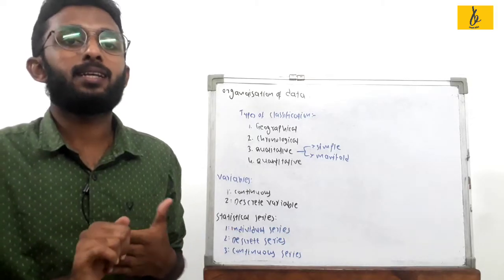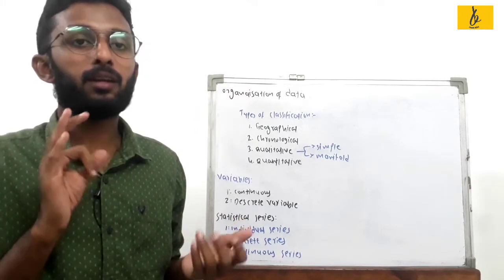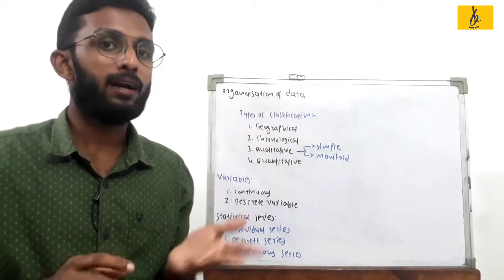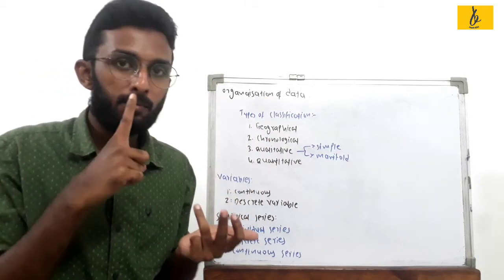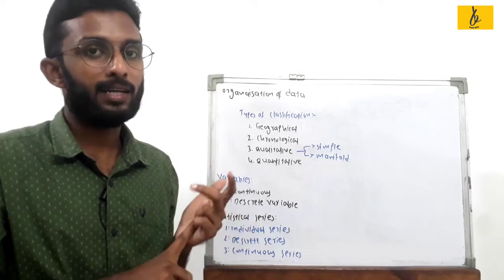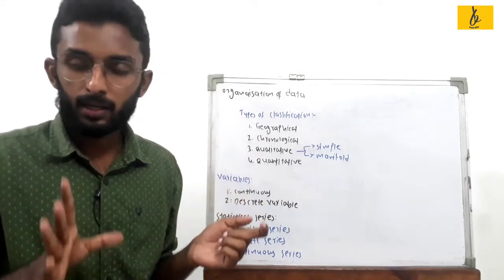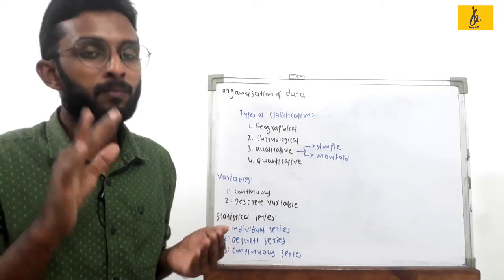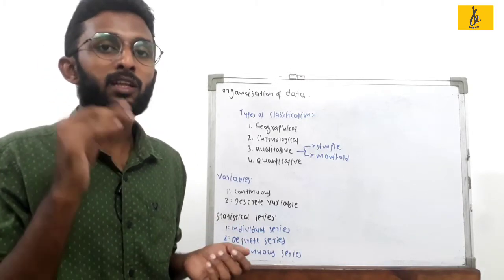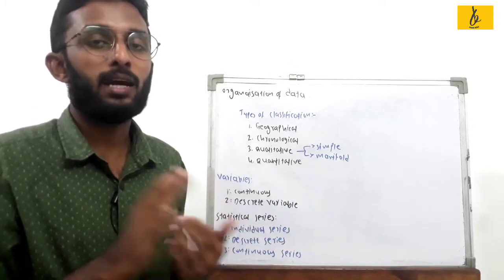In this class, we will discuss the third step in statistics. The third step is organization of data. The first step is planning, the second step is collection of data, and the third step is organization of data. We collect data from certain magnitude, and this process is called organization of data.